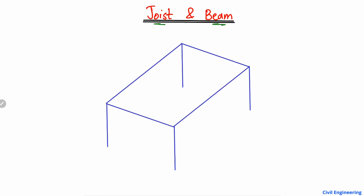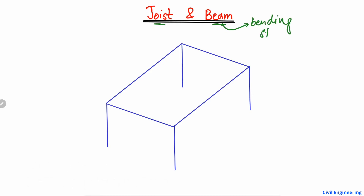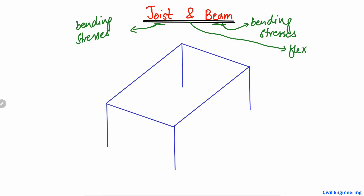I will explain the difference with the help of an example so it will be easier to understand. A beam is basically a flexural horizontal member used to take the bending stresses. Similarly, a joist is also a flexural member used to take the bending stresses in a structure. So both members are basically flexural members.